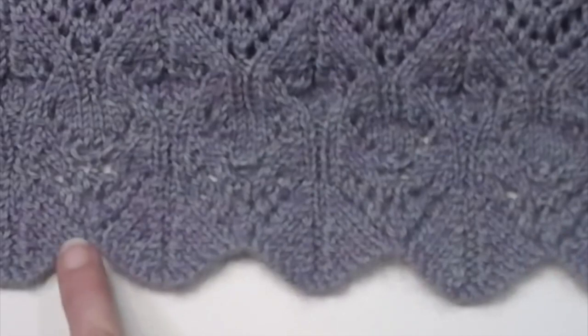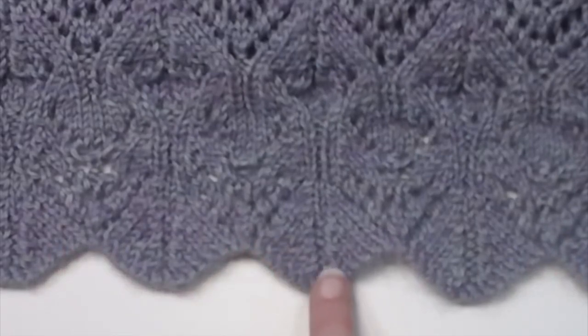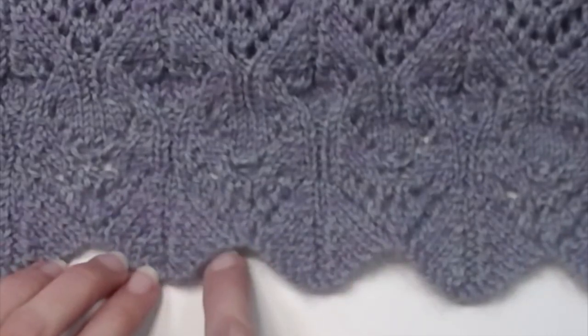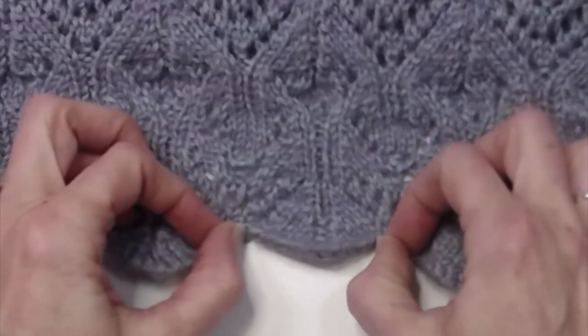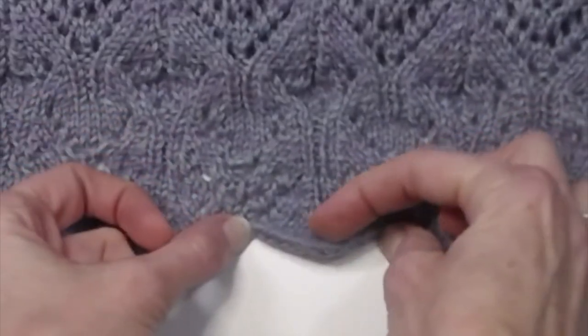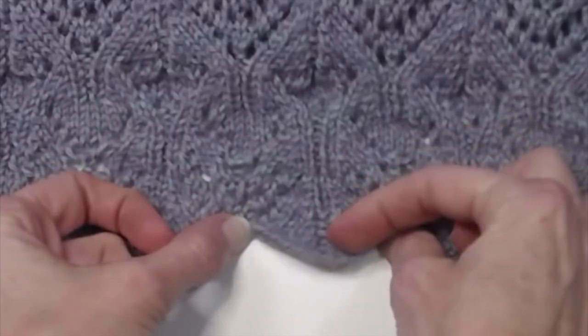When creating a lace edge that moves, you need a cast-on that can travel this distance. When using a traditional cast-on, it's often too tight and your lace motif will cup up, so I'm going to show you my favorite cast-on which is going to use two needles.